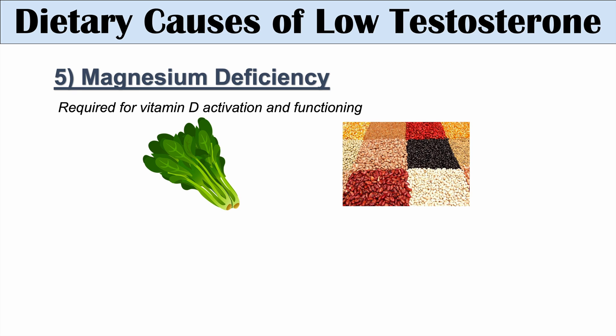So those are the five deficiencies associated with a low testosterone level: zinc deficiency, selenium deficiency, vitamin E deficiency, vitamin D deficiency, and magnesium deficiency.